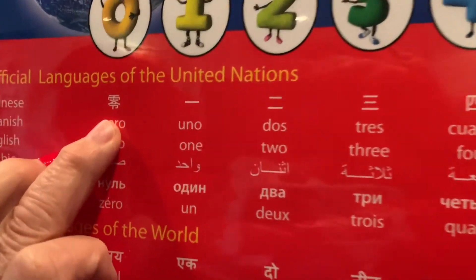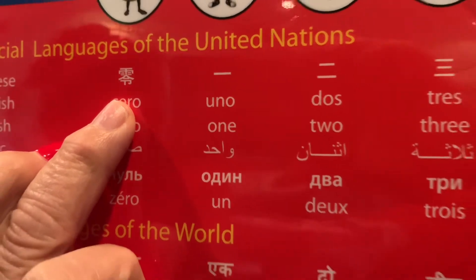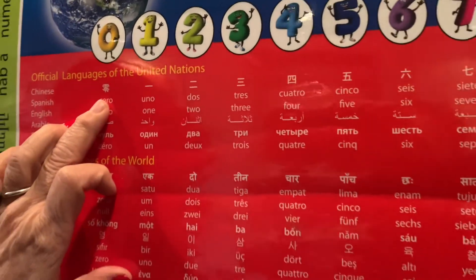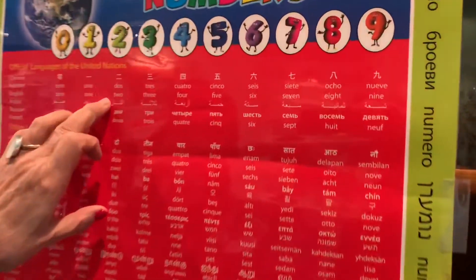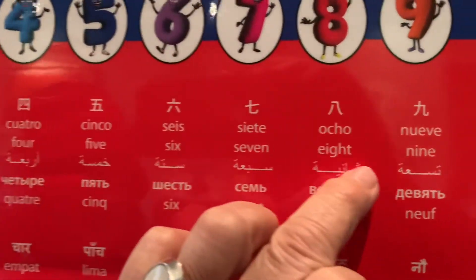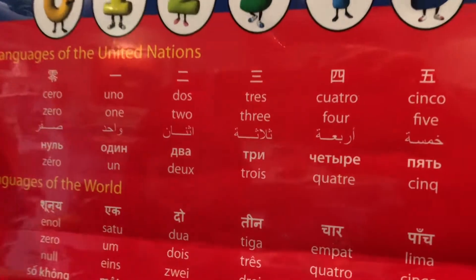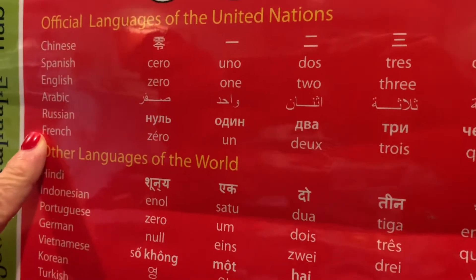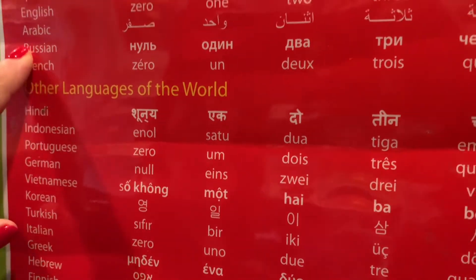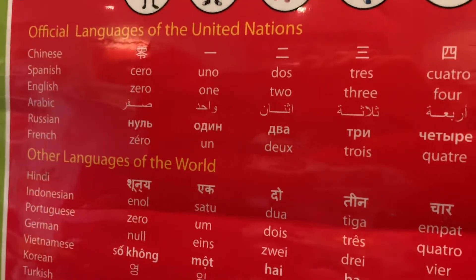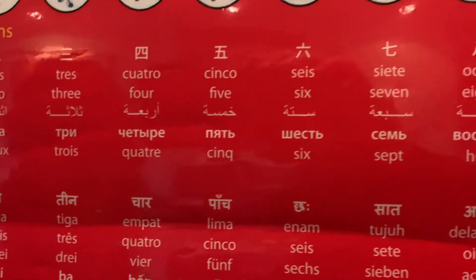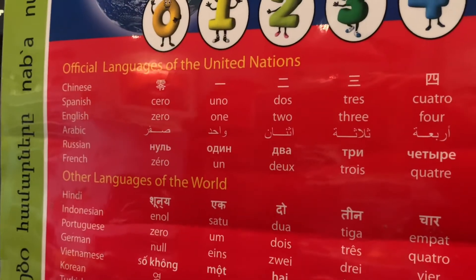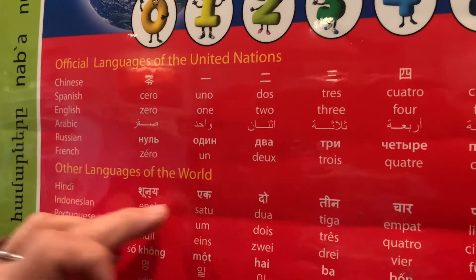It was added much later. It wasn't part of the original number system of China because it was based on just the pictures. And then we have Spanish, French, Russian, Arabic, English, Spanish, Chinese — these are the official languages of the United Nations, showing how the numbers 0 to 9 are written. And you can figure out how Arabic is read — it's right to left, not like the rest of them which are left to right.